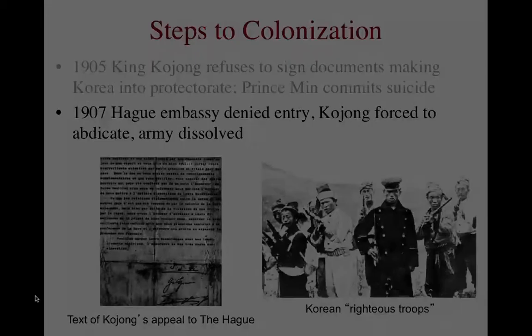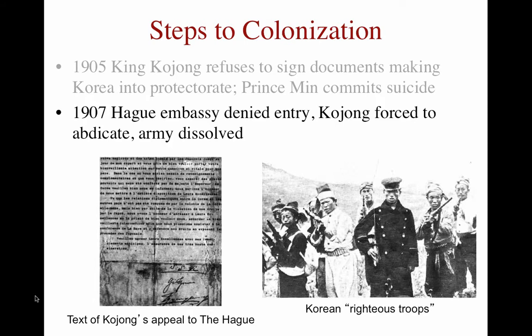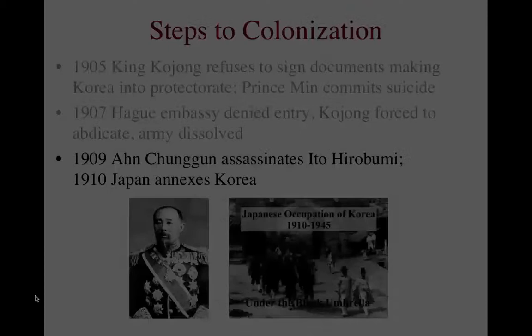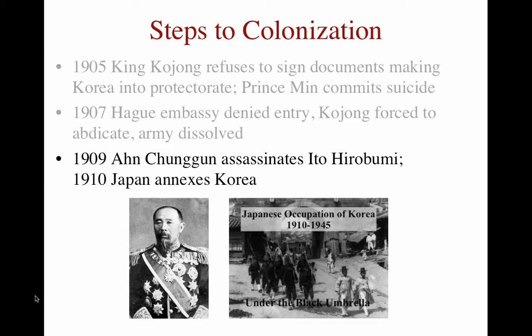In 1907, King Kojong sent diplomats to The Hague in an effort to protest to the rest of the world about the forced signing of this treaty. But the Japanese anticipated this and had the embassy denied entry. They also forced King Kojong to abdicate and dissolved the Korean army, some members of whom went on to form guerrilla units — the so-called righteous troops — which fought against the Japanese for many years thereafter. Finally, in 1909, Ahn Chung-Gun, a Korean patriot, assassinated the Japanese Governor General Ito Hirobumi. He was captured and executed, and partly as a consequence, the following year the Japanese annexed Korea, making it into a true Japanese colony.